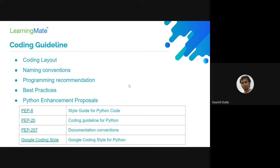All of these things are normally mentioned in a coding guideline. This coding guideline is Python-specific and will apply to any Python file we write. As part of Python Enhancement Proposals by the community, a few well-known guidelines are available, known as PEPs.